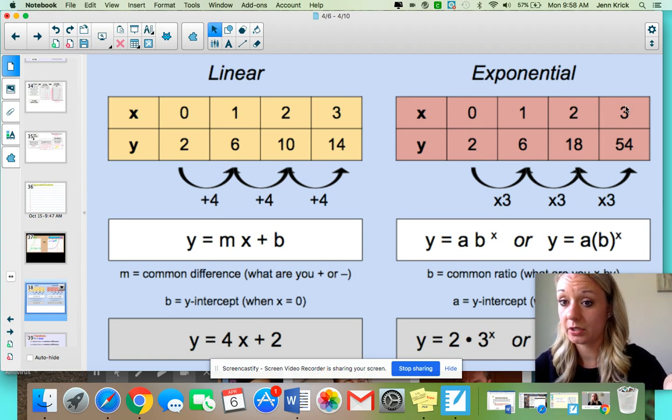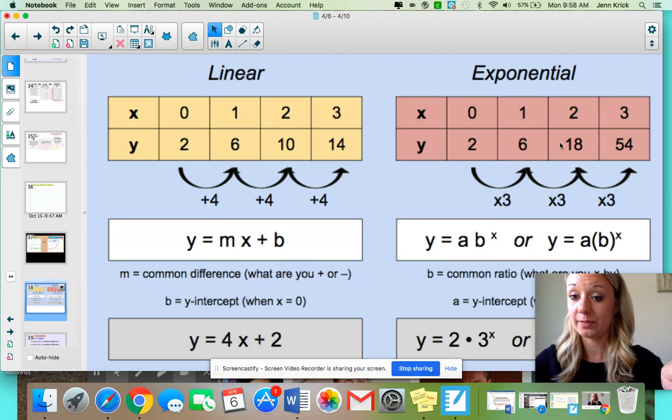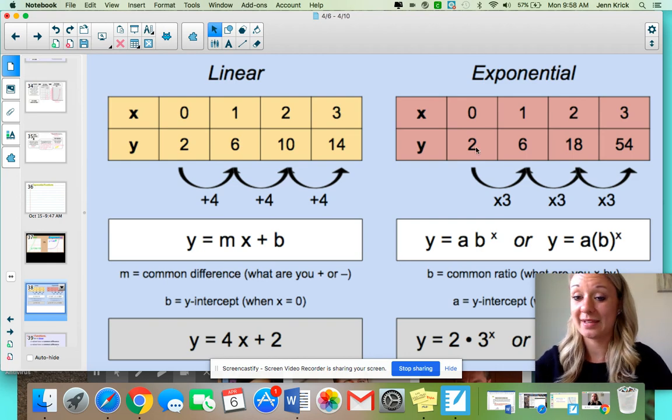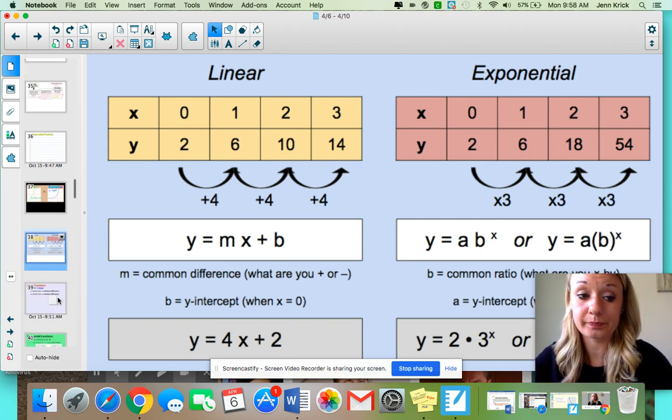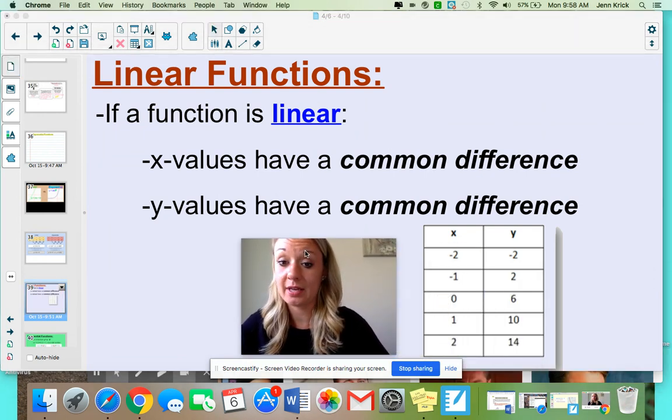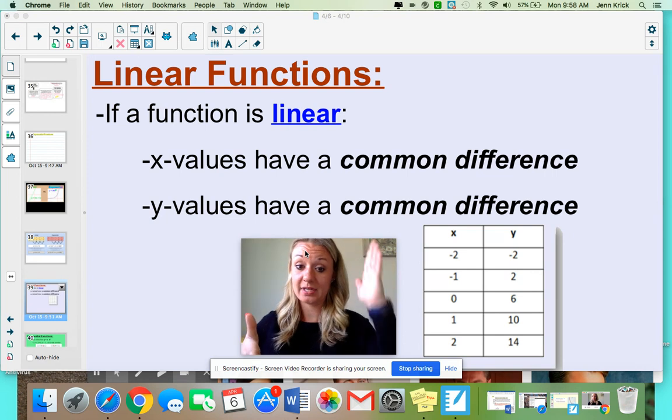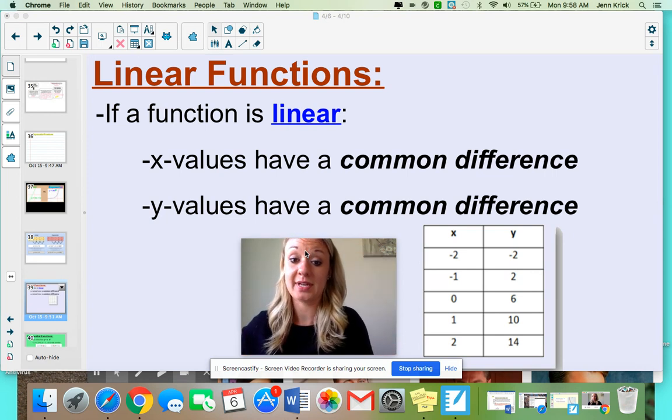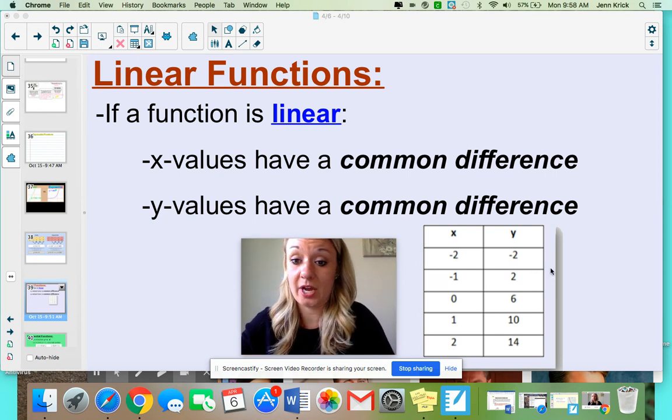So common difference of one, common difference of four. You're adding the same amount. With exponential tables, however, notice even though your x's are still going up by one, your y's are being multiplied by a common ratio. These are being multiplied by three. So as soon as you see y's being multiplied, you know that that's going to be exponential. Okay, so let's go back to what we know. For a linear function, it is linear if your x's have a common difference and your y's have a common difference. That just means that you're adding or subtracting the same number.